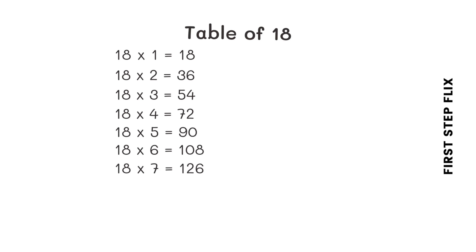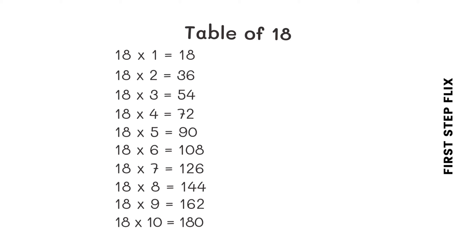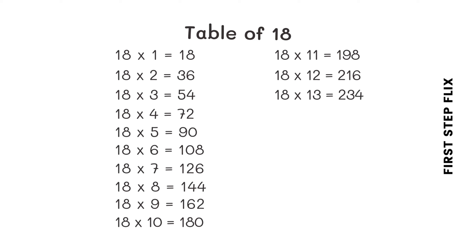18 eights are 144. 18 nines are 162. 18 tens are 180. 18 elevens are 198. 18 twelves are 216. 18 thirteens are 234. 18 fourteens are 252.